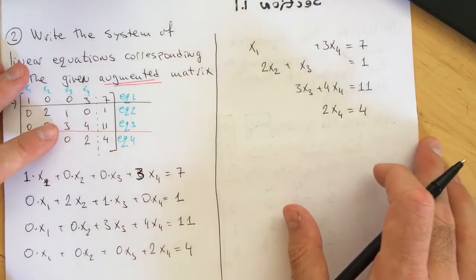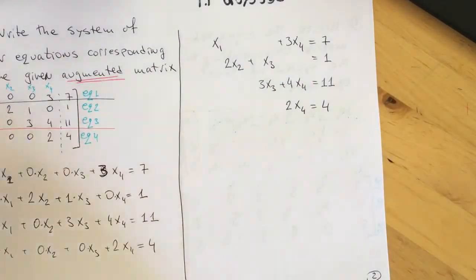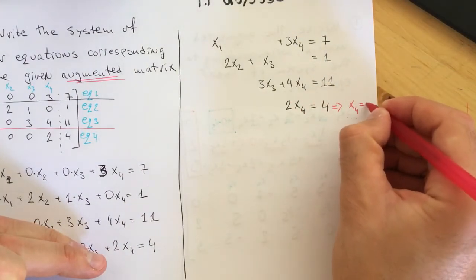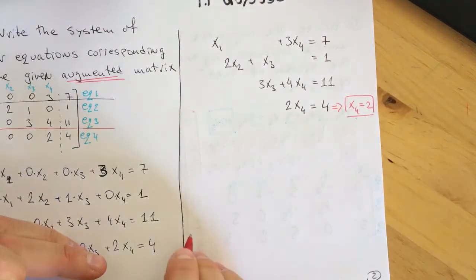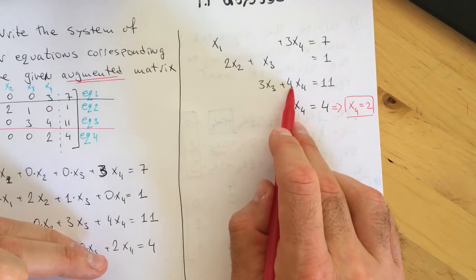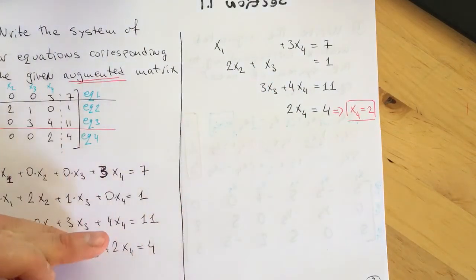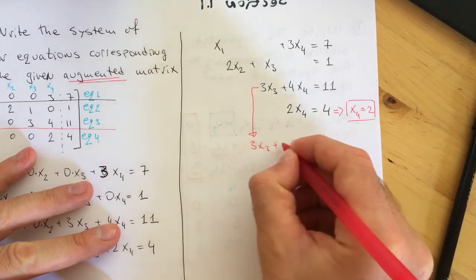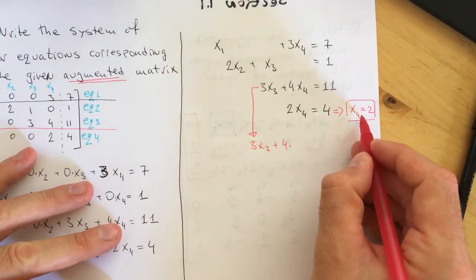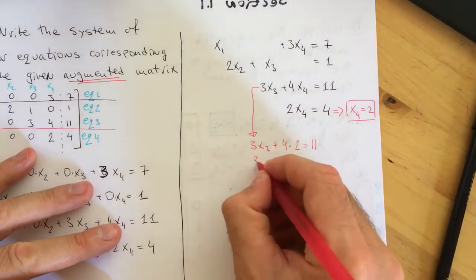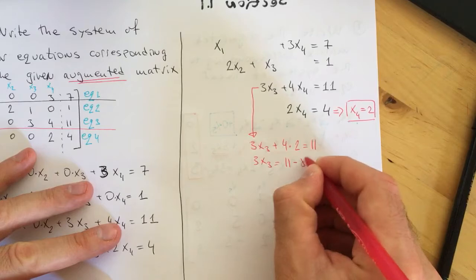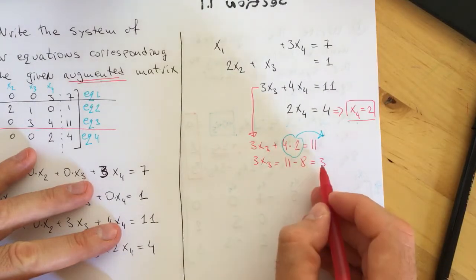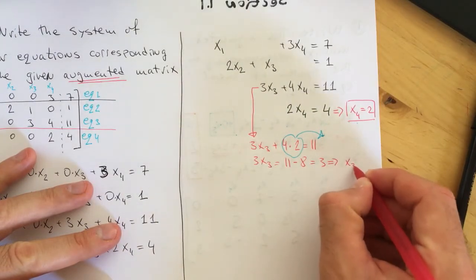Although this is not the question, we can simply solve this system. From the last equation, dividing by 2 gives x4 equals 2. Plugging into the third equation: 3x3 plus 4 times 2 equals 11, so 3x3 equals 11 minus 8, which is 3. Therefore x3 equals 1.